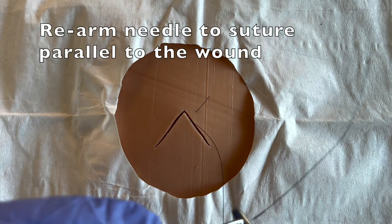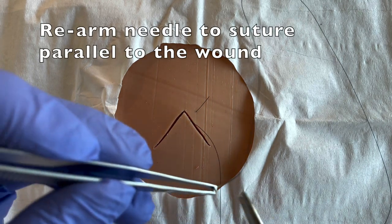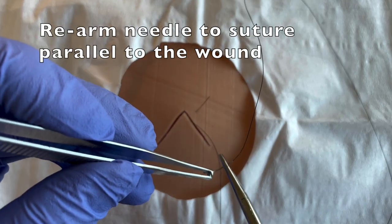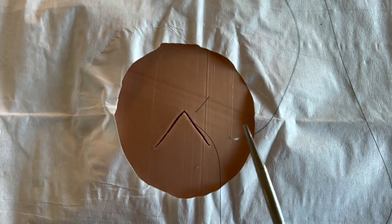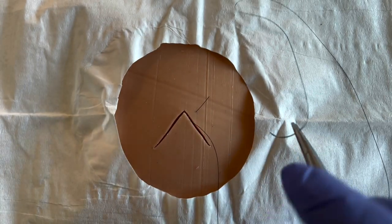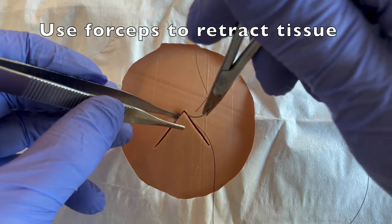Next, you're going to rearm your suture needle in a fashion that will allow you to suture parallel to the wound as opposed to perpendicular to the wound, because now you're going to go through the edge of that flap.